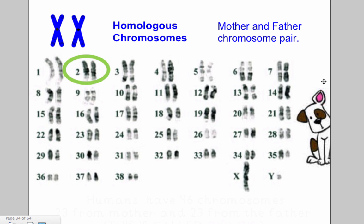Here we can see the karyotype of a dog. As you can see, dogs have 39 chromosome pairs. We have to count down also the sexual identity of the chromosome, so the X and the Y will count as a pair. Now is this a boy or is this a girl dog? This will be a boy because it has an X and a Y.